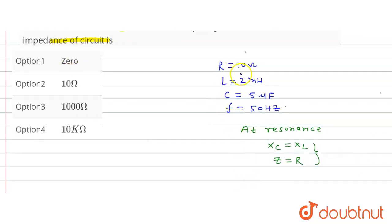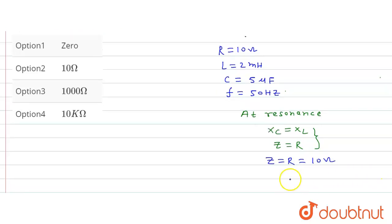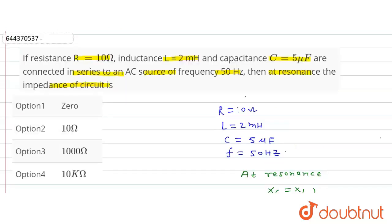From the question, R is given as 10 ohm. So Z equals R equals 10 ohm. The impedance value is 10 ohm. So option second is the correct option.